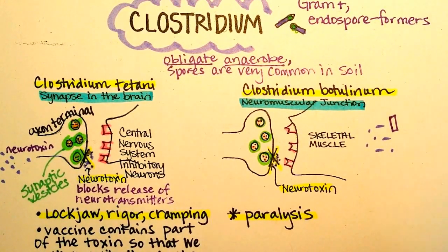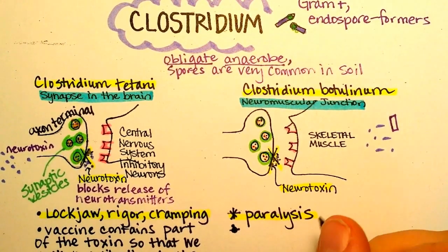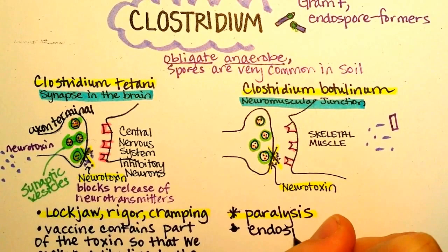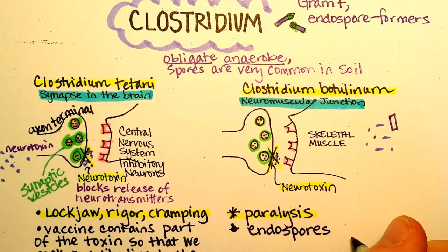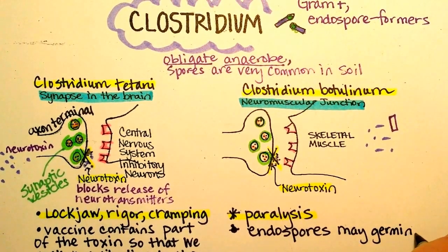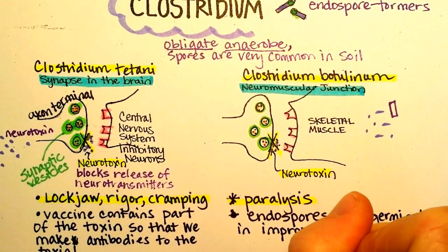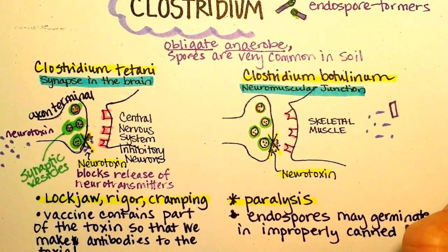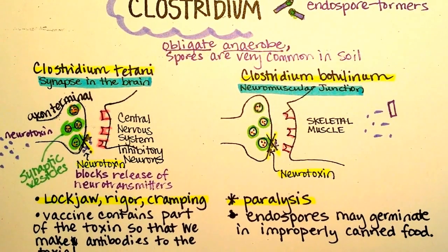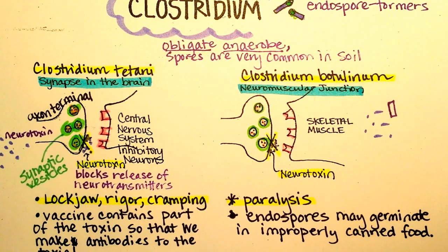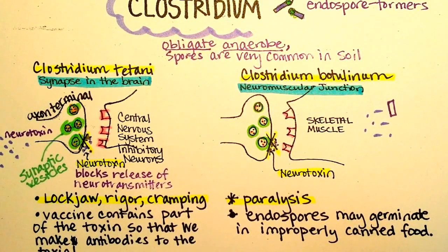This organism is notable because the endospores made by Clostridium botulinum can germinate in improperly canned food. If the food gets sealed up and there were endospores of botulism in the canned food, they can actually germinate inside the can because it's an obligate anaerobe — it can live and in fact thrives inside the can.